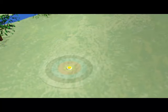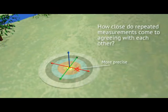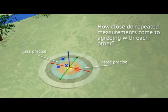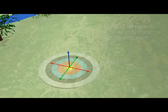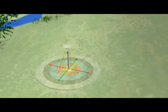In geodetic surveying, precision refers to how close your repeated measurements come to agreeing with each other. Good surveying procedures contribute to precise measurements.